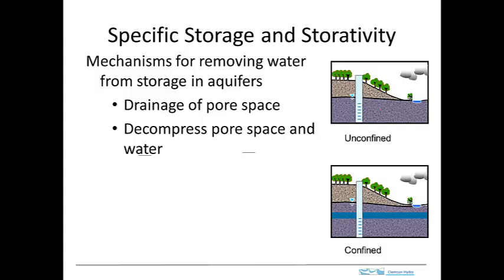First, we'll take a look at an unconfined aquifer. Here's the unconfined aquifer and here's the water table. When we pump water out from the aquifer, we drop the water table — it drops from there to there. As a result, the water that was in the pores in this region drains out. Some of it will be retained, but some drains out, and that's essentially the water we're able to remove from the well. The process of draining the pores allows us to remove it from storage.